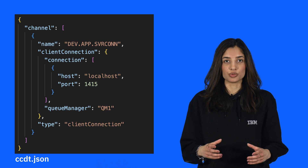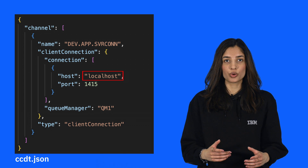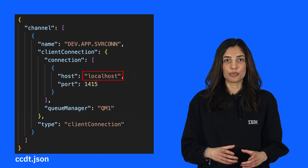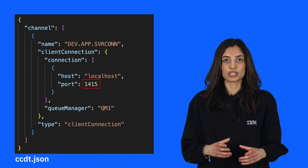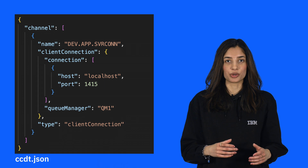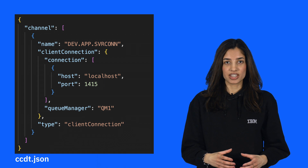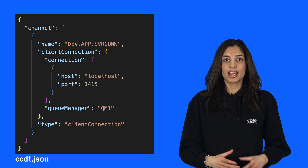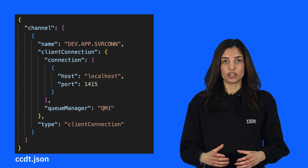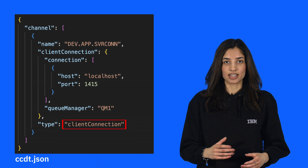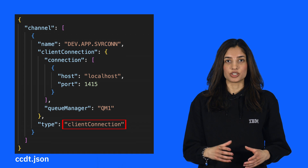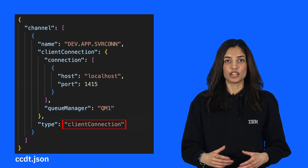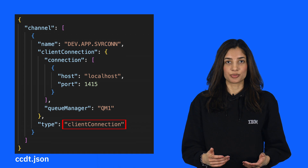A client application would need to connect to localhost at port 1415 using the TCP/IP protocol. The type of connection created between the application and the queue manager is client connection, and all channel definitions in a CCDT should be of this type.